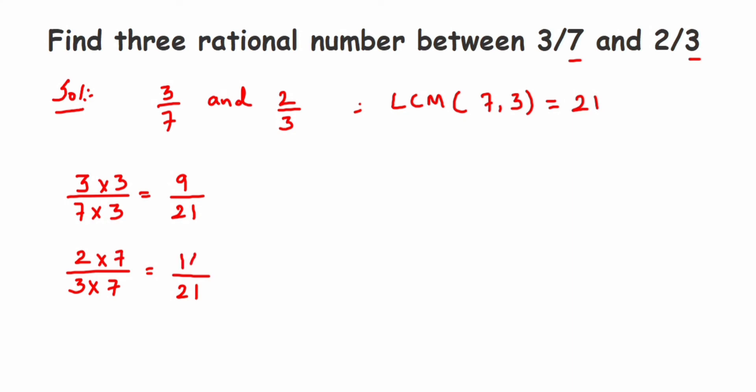Now you can see that we got 9/21 and 14/21. Denominators are same and we want only three rational numbers. Between 9 and 14 we have numbers 10, 11, 12, and 13. We have four numbers here, so from here we can pick any three.